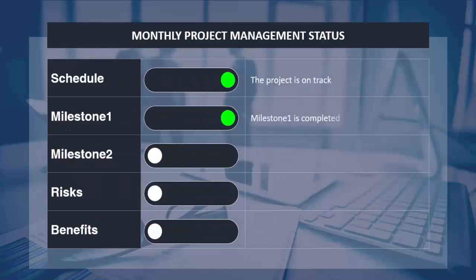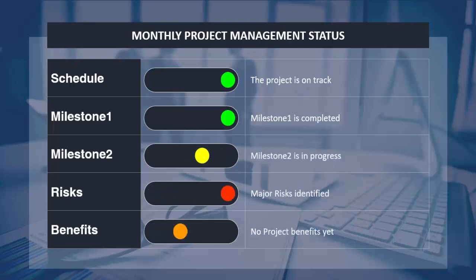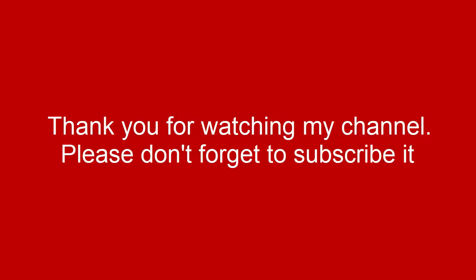The status labels show: milestone is on track, milestone 2 is in progress, risk — major identified, and benefits — no benefits. Thank you for watching my channel, please don't forget to subscribe and see you soon with more interesting stuff — till then, goodbye.